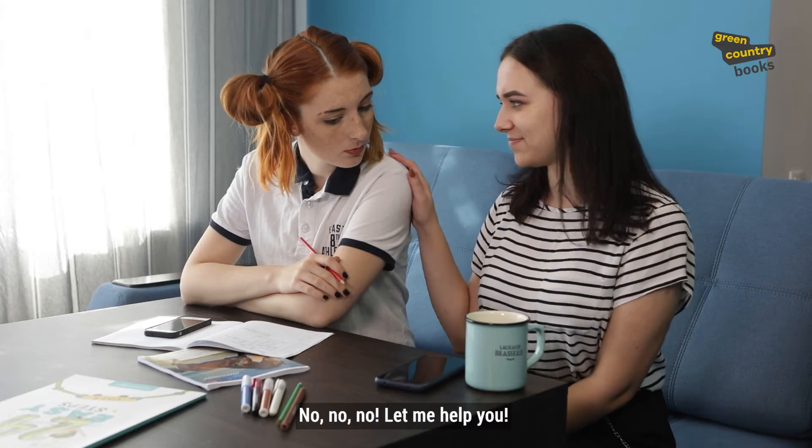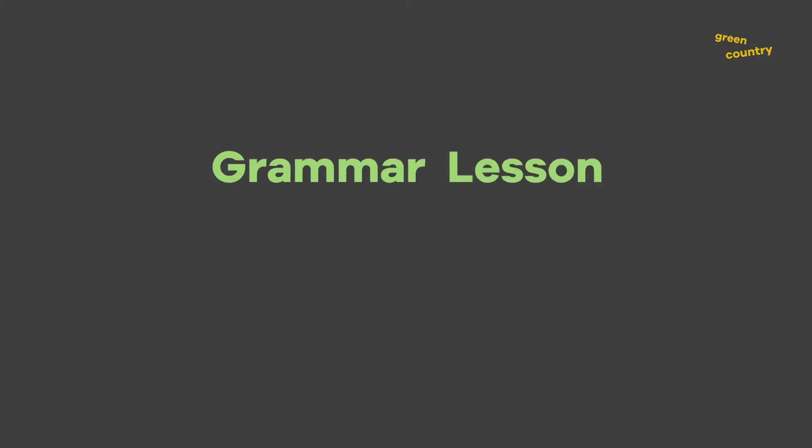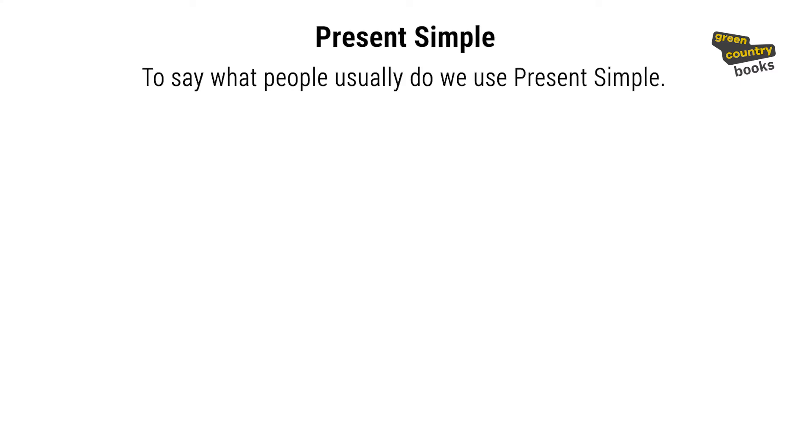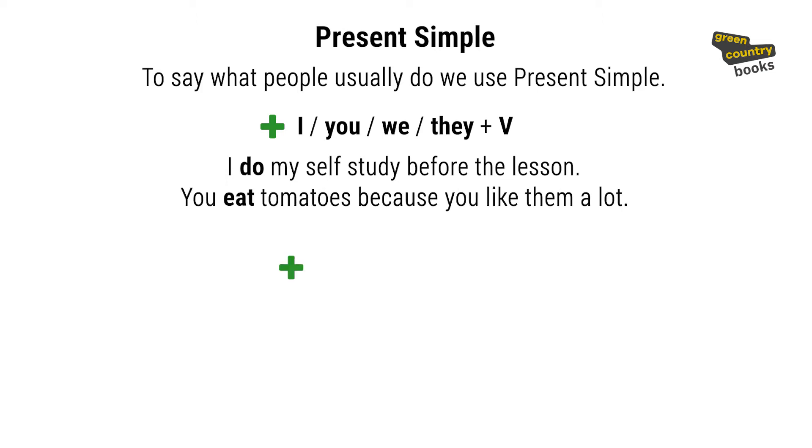No, no, no. Let me help you. To say what people usually do, we use Present Simple. Let's talk about positive sentences. With I, you, we, they, we use just the first form of the verb. I do my self-study before the lesson. You eat tomatoes because you like them a lot.